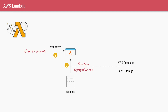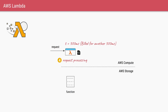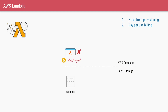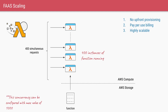After about 45 seconds, another request comes in for your function. AWS will take your function from storage and deploy it back to compute. The same thing happens for the second request — your function runs for 300 milliseconds, you are billed for another 300 milliseconds, and once its job is done, that function is destroyed and you are no longer charged for it.